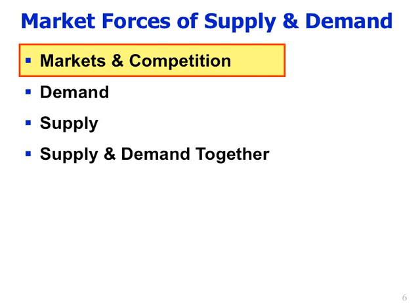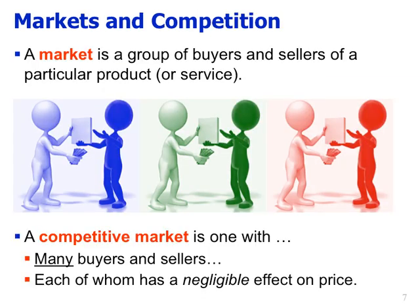In terms of markets and competition, the first thing to do is define a market. A market is ultimately any group of buyers and sellers of a particular product or service — it doesn't need to be a physical marketplace. We certainly have online markets. A competitive market is one with many buyers and sellers in which there's actual competition, where buyers compete to buy from sellers and sellers compete to sell to buyers.